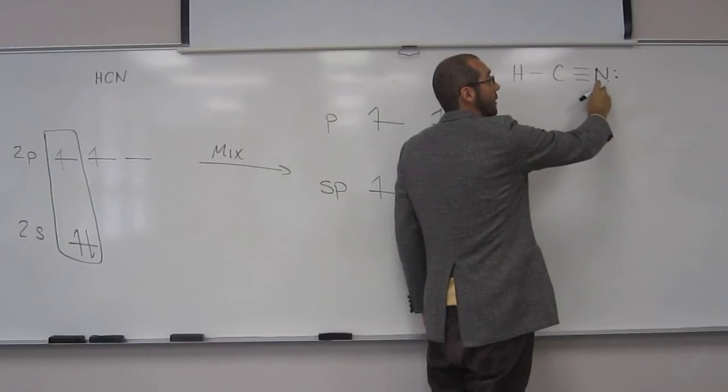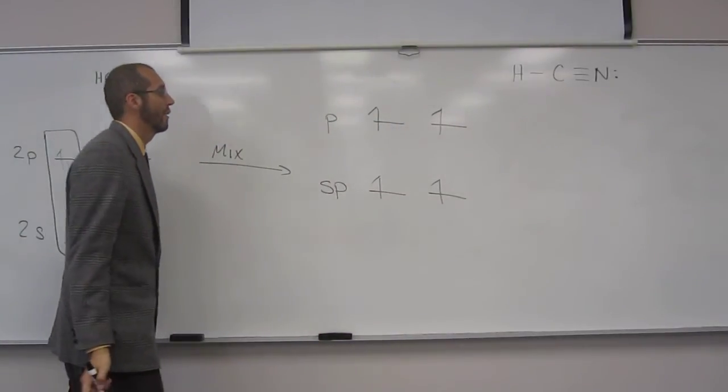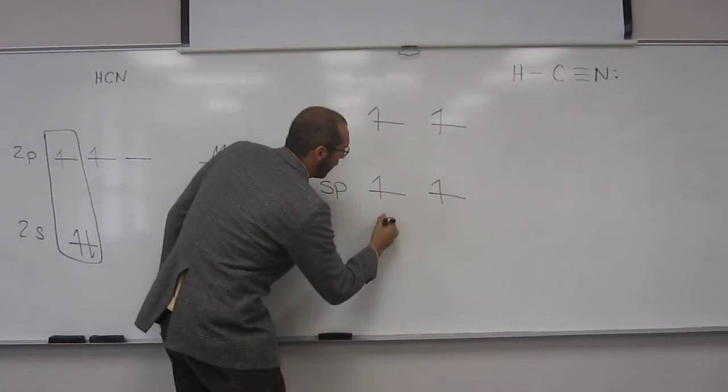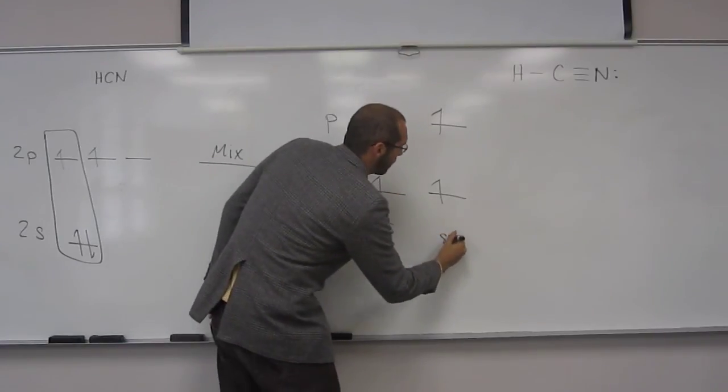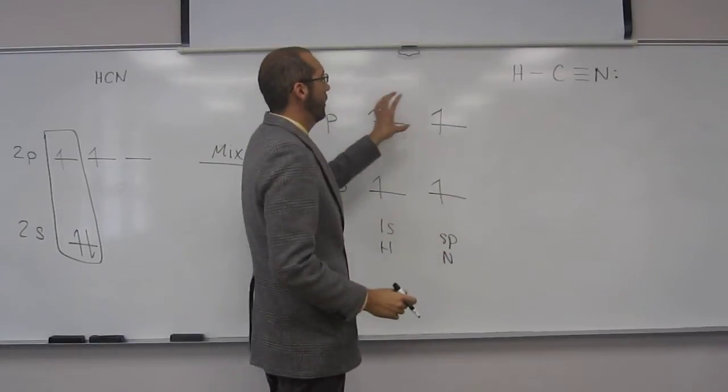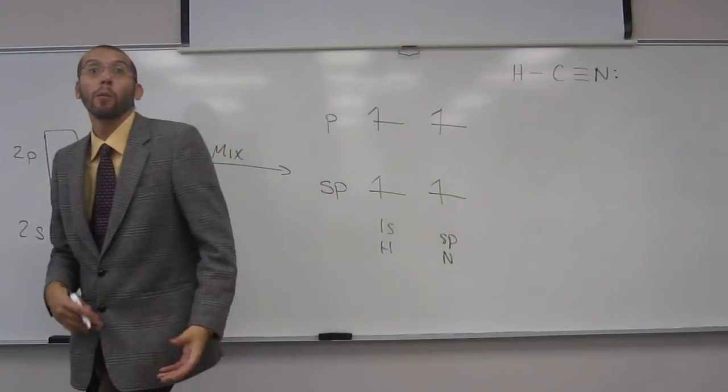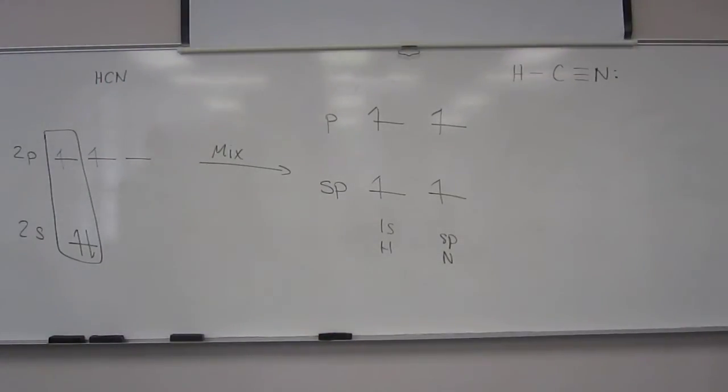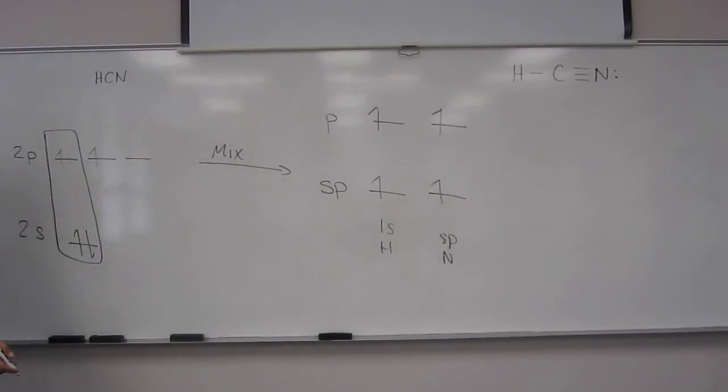So this is sp. So it's going to be an sp bonding with an sp, I guess. Couldn't think of the question faster. Okay? So this would be the 1s of the hydrogen is bonding with this thing, the sp of the nitrogen. And what would be bonding with these guys up here? Pi bonds. Yeah, the p orbitals from the nitrogens to make pi bonds, we say. Okay? So the nitrogen atom would look very similar to this, except it would have one more electron. Okay? And that would give it its lone pair.